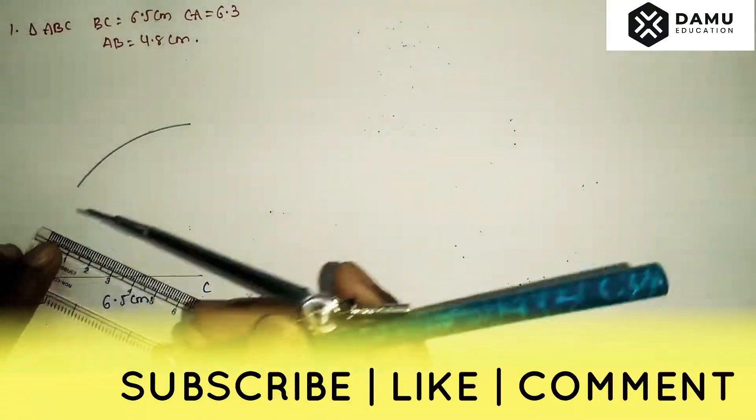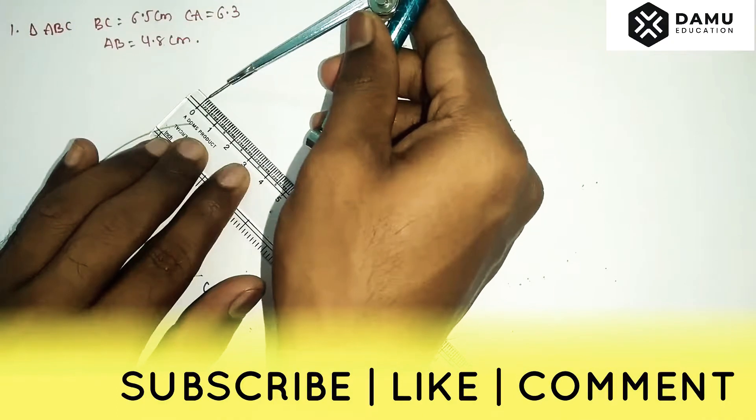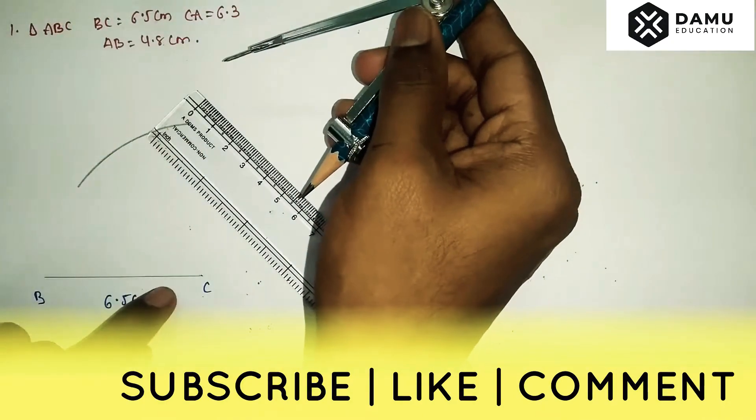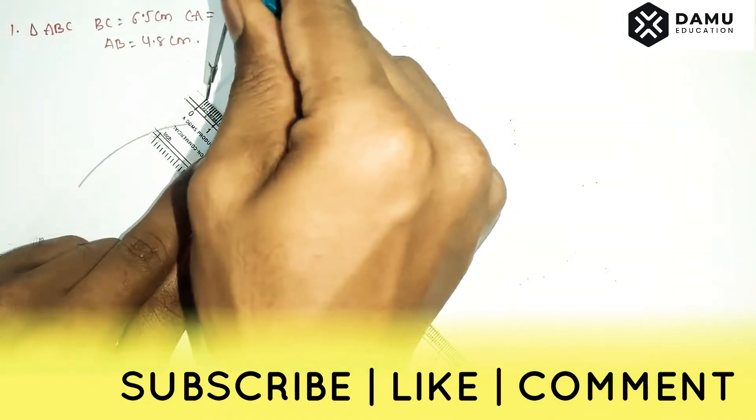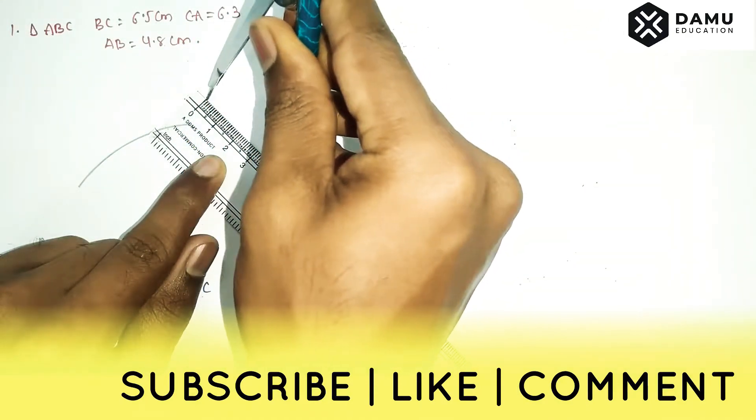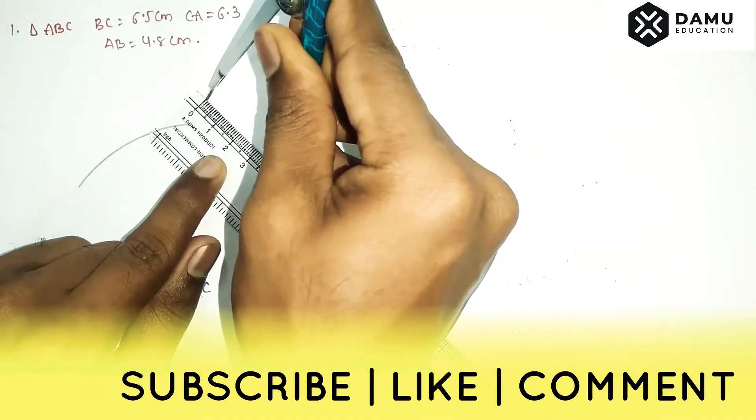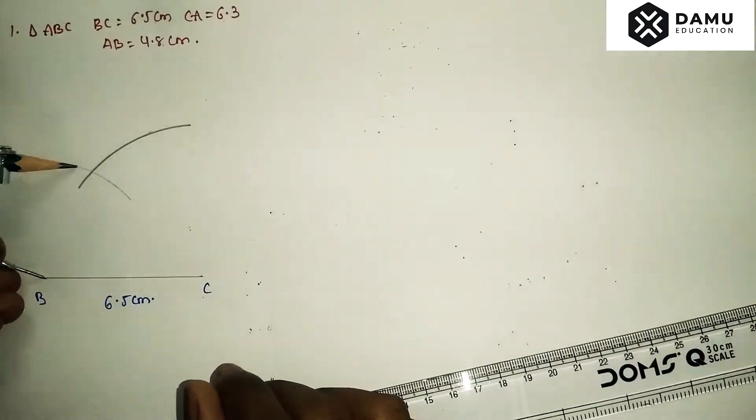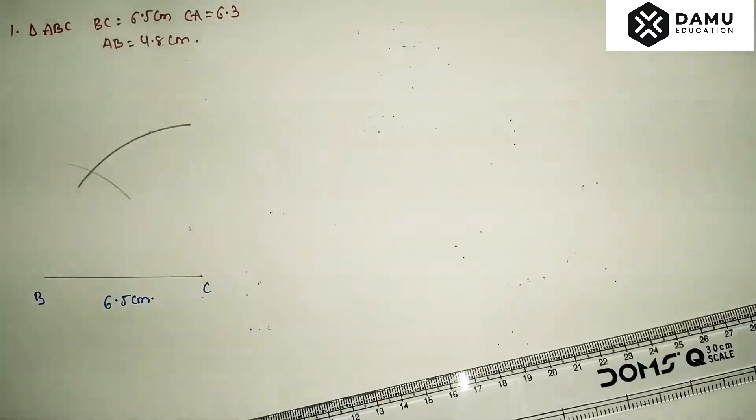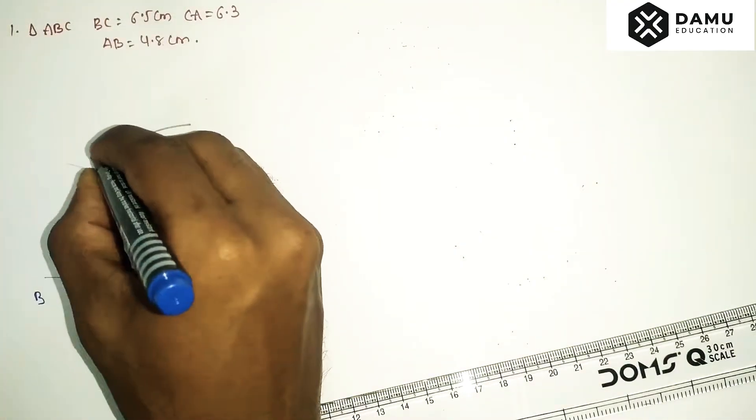We already drawn BC, then AB will be 4.8. Drag it up to 4.8. With B as center, draw one arc which needs to coincide the prior arc with radius 4.8 cm. That point is A.